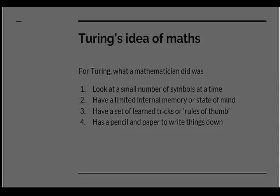For Turing, what a mathematician did was to look at a small number of symbols at a time. The mathematician had a limited internal memory or state of mind which he could use for calculations. They had a set of learned tricks or rules of thumb. And they also had a pencil and paper to write things down on, or a blackboard to write things down on. This addition of the blackboard, pencil and paper, or abacus, some external form of recording, something that Turing emphasizes, and people abstractly talking about mathematical reasoning had in the past tended to underestimate.